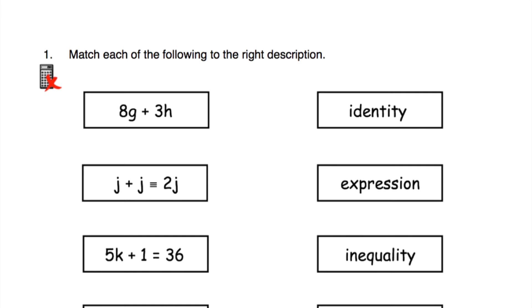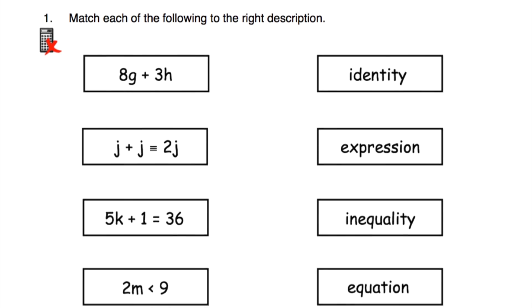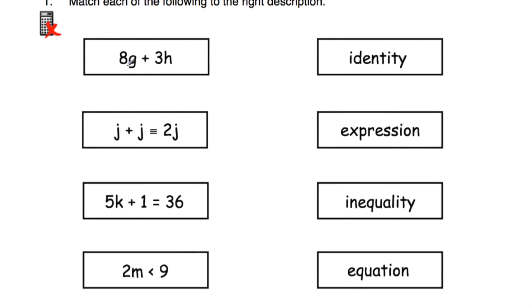Question number one says: match each of the following to the right description. We've got 8g plus 3h, j plus j is equivalent to 2j, 5k plus 1 is equal to 36, and 2m is less than 9, and we've got four choices: identity, expression, inequality, and equation. First of all, 8g plus 3h — we don't have an equal sign, equivalent sign, or inequality sign, so this is just an expression.